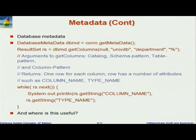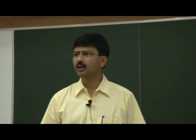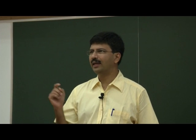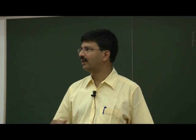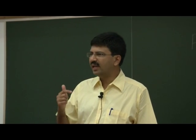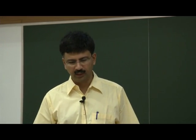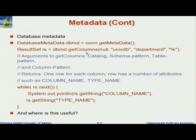The second kind of metadata is for querying what relations exist in the database and what their attributes are. For this, when you open the database connection, you call `connection.getMetaData()`, and the result is an object of type DatabaseMetaData. On that object, the key function is `getColumns()`. Unlike ResultSetMetaData where there's a fixed number of columns, here there are many relations which in turn have attributes.